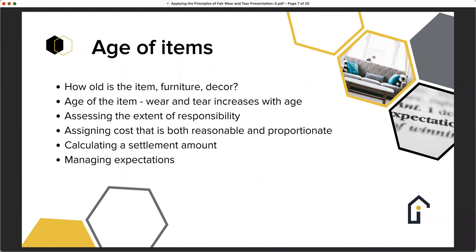A tenant wouldn't be expected to replace a carpet that's already been down for five years if they've only been there for three. It's about understanding that calculation and managing expectations. Everything will naturally wear — whether it's furniture, flooring, or an appliance — there will be an element of fair wear and tear. You have to manage expectations not only of the tenant but also the landlord and agent: the property will not come back brand new; there will be marks, usage marks and wear.